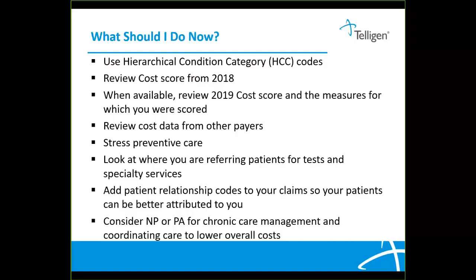So what should you do now? First, make sure that you are using the hierarchical condition category codes — HCC codes — to identify those complex patients. Remember, this starts over every year, so ensure that you're documenting the diagnosis codes correctly in your patient records and on your claims. CMS considers comorbid conditions when calculating the cost of care for beneficiaries whose care and treatment are most complex. The cost measures are risk-adjusted, and providing care to higher-risk patient populations will increase your cost benchmarks, but only if CMS gets the necessary claims data to reflect the patient's medical complexity.